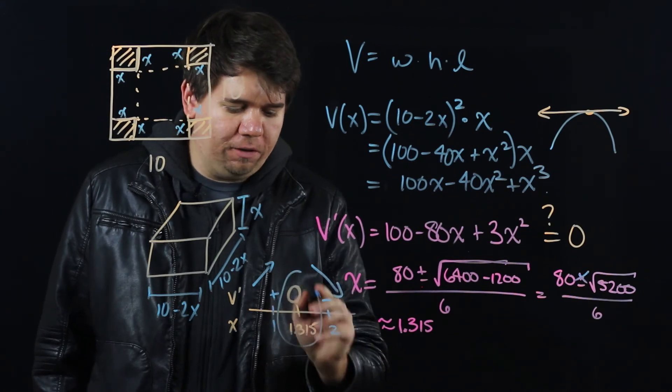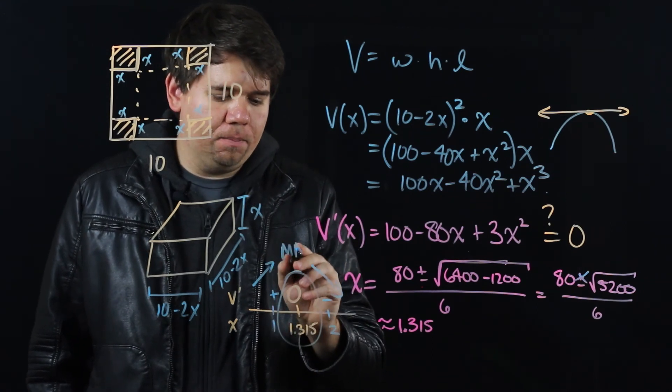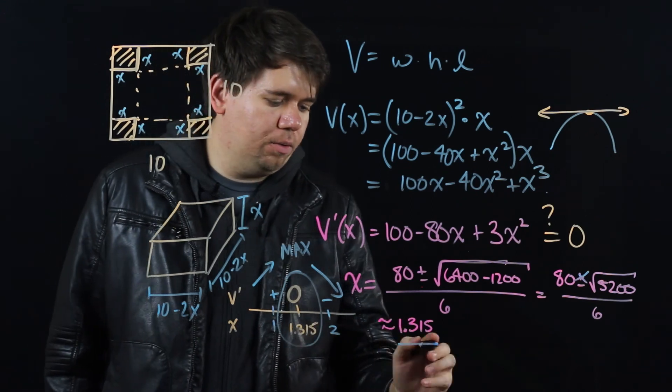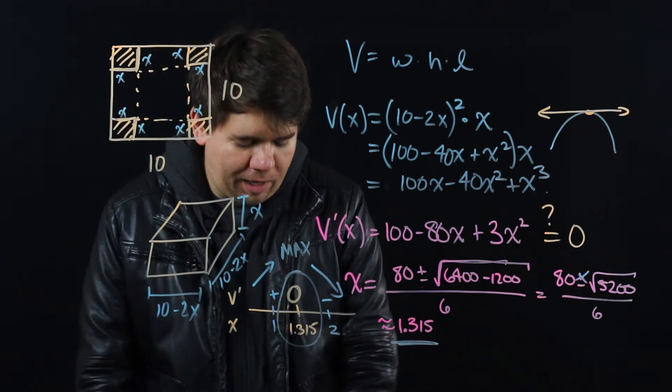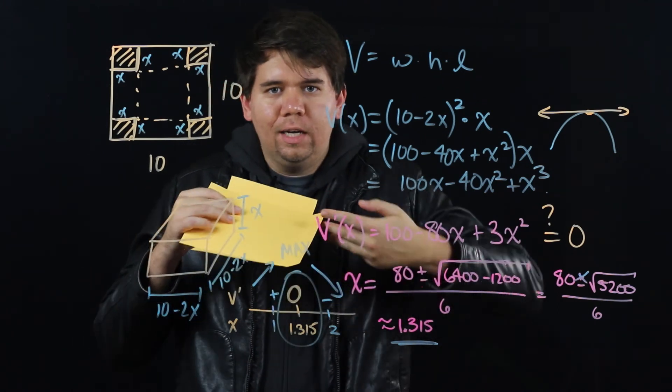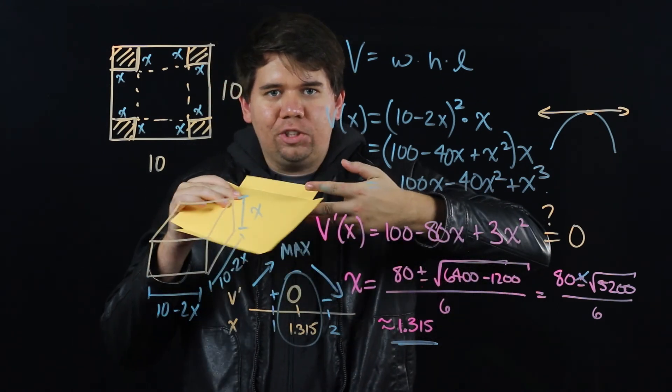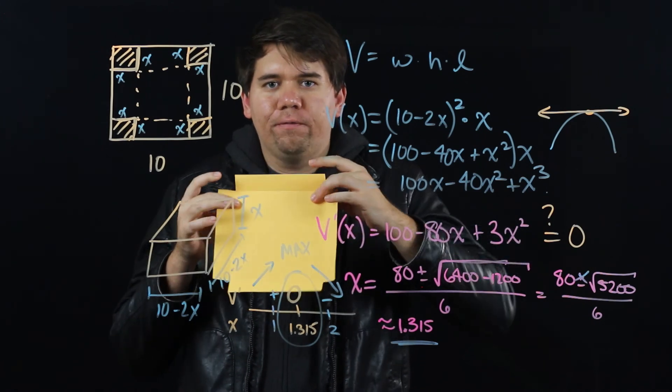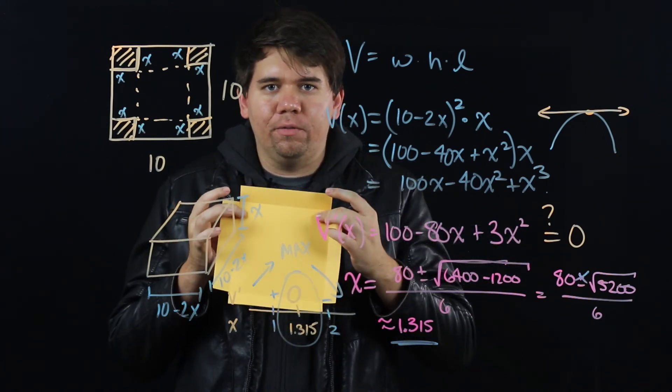So sure enough, this verifies you really did have a maximum. Your x equals 1.315. So if I wanted this to have maximum volume, I shouldn't have cut 1 inch or 2 inch. I should have cut 1.3 inches by 1.3 inch squares from each corner and removed it.